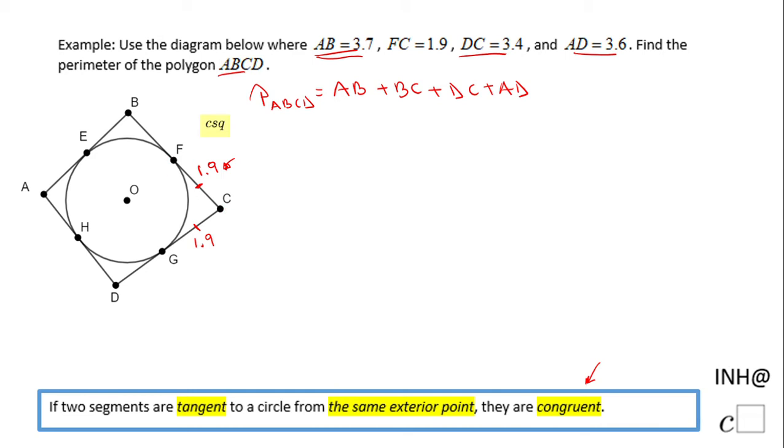Now I can try to find DG, this segment, because I know DC equals DG plus GC. DC is 3.4, DG is the thing we need to find out, and GC we just identified as 1.9. So we just do one simple subtraction here. From 3.4 I'm going to subtract 1.9.